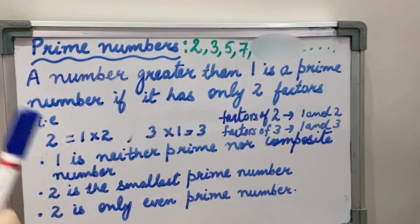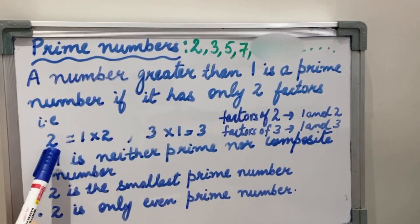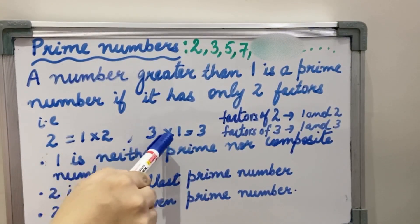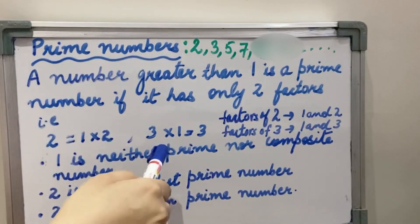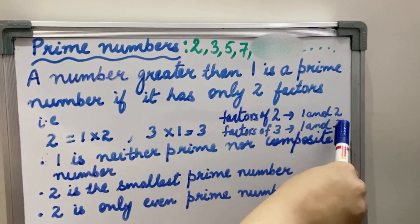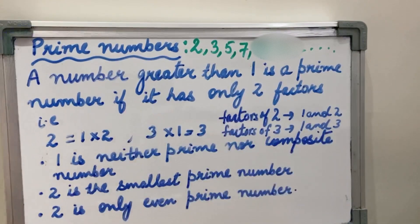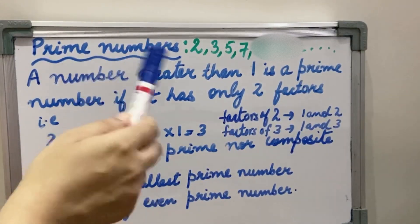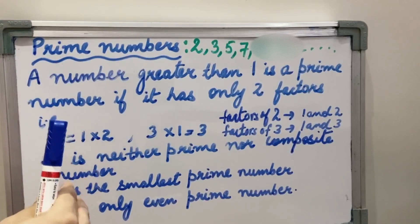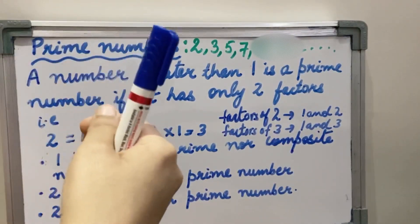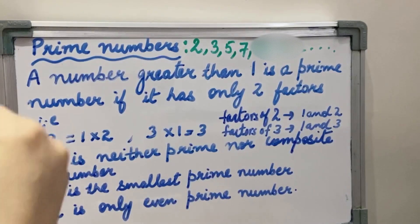They are greater than 1 and they have only 2 factors. Why? Because 2 can be written as 2 = 1 × 2 only. We cannot write 2 as any other multiplication of 2 numbers. 3 can only be written as 3 × 1 = 3. So the factors of 2 are 1 and 2, and factors of 3 are 1 and 3. That's why these numbers which have only 2 factors are known as Prime Numbers. Now they have one part with them like a Prime Minister — they have some special power among numbers.